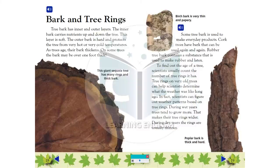To find out the age of a tree, scientists usually count the number of tree rings it has. Tree rings on very old trees can help scientists determine what the weather was like long ago. In fact, scientists can figure out weather patterns based on tree rings. During wet years, trees tend to grow more. That makes their tree rings wider. During dry years, the rings are usually thinner.